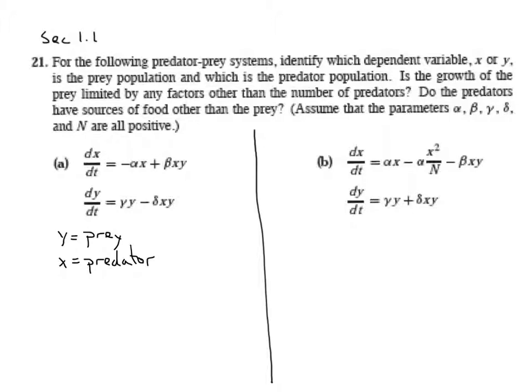because in the absence, if the x is 0, this term is missing, and we see that y grows at a rate proportional to itself. Up here, we see that if the prey is missing, if y is 0,